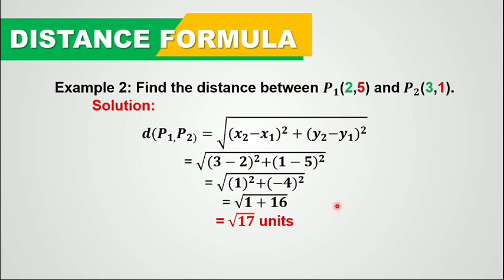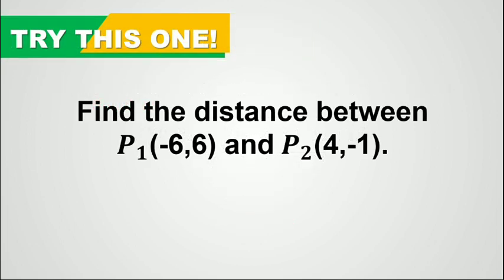That is just how to use the distance formula in solving the distance between two given points. Now I want you to try this one: find the distance between point 1 and point 2 given their coordinates — point 1 is negative 6 and 6, and point 2 is 4 and negative 1. Try this and comment your answer in the comment section below. That's all for now. Thank you for watching and let's keep learning.